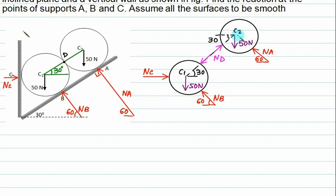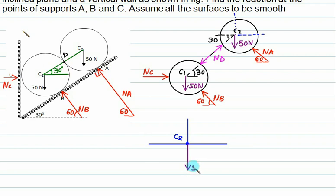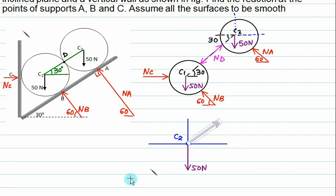Check the coordinate axis: the x-axis and y-axis are constructed here for point C2. The weight is acting downward equal to 50 N. Nd will act in the third quadrant, so we pass this force along the same line of action making it an outward force. The angle made by Nd with the horizontal is 30°.